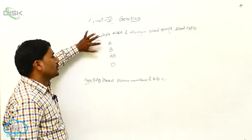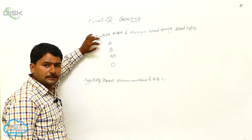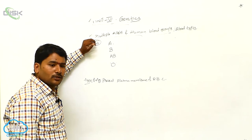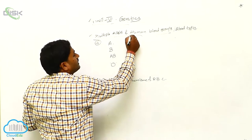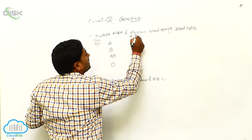There are two types of antigens — A and B.